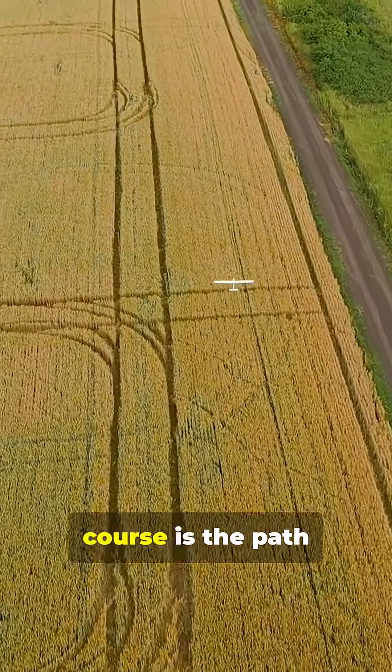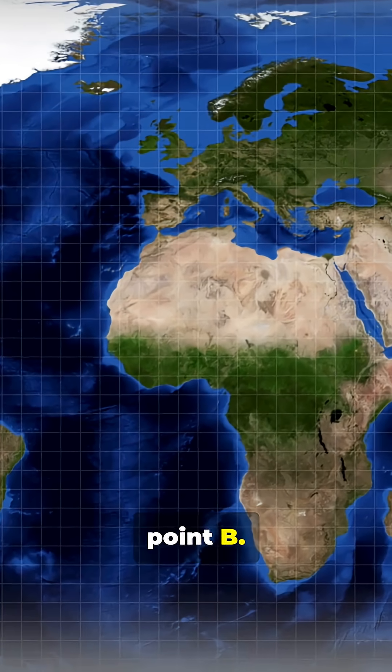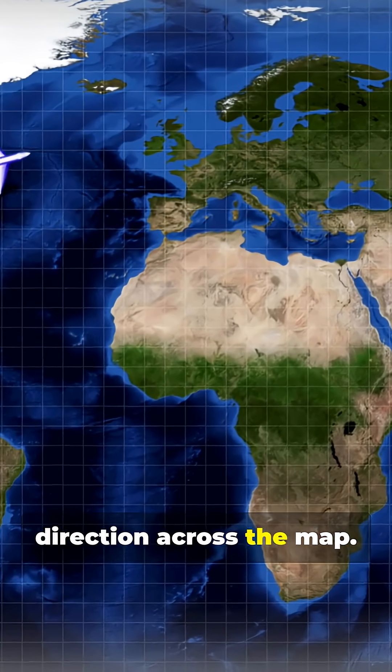When you're flying an airplane, course is the path you intend to fly over the ground, like a straight line from point A to point B. It's your planned direction across the map.